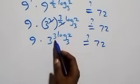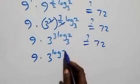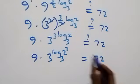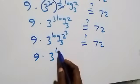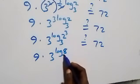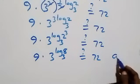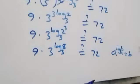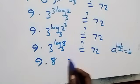Reversing the power-log, 3 raised to power 3·log₃2 becomes 3 raised to power log₃(2³), which is the same as log₃8. Applying the identity a raised to power log_a(b) equals b, we get 3 raised to power log₃8 equals 8. So this becomes 9 times 8 equals 72.